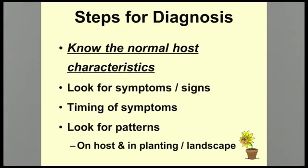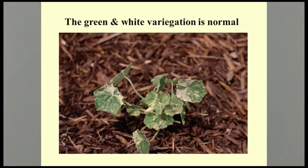There are several steps to diagnosing plant problems. First, before we can tell if there's something wrong with a plant, we need to know what the normal healthy plant is supposed to look like. Some plant varieties may have unusual characteristics such as variegation or dwarfing. In this example, the green and white pattern on the leaves of this nasturtium are normal — it's the variety Alaska, a variegated variety.